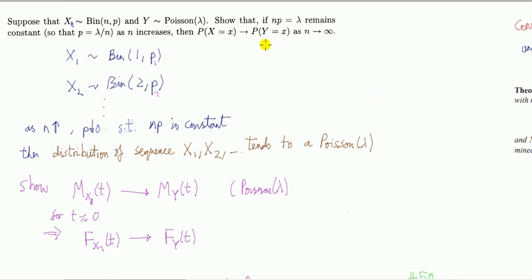Now to do the proof here, you could work on the probability mass function, showing that this tends to this as n tends to infinity. But I'm going to show you a quicker proof, and that's using MGFs.